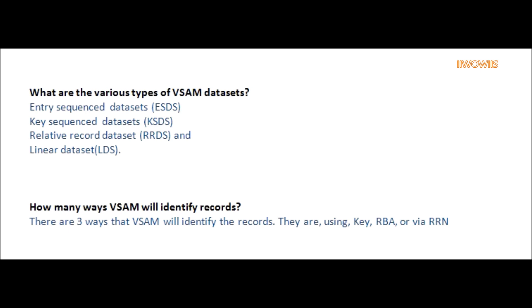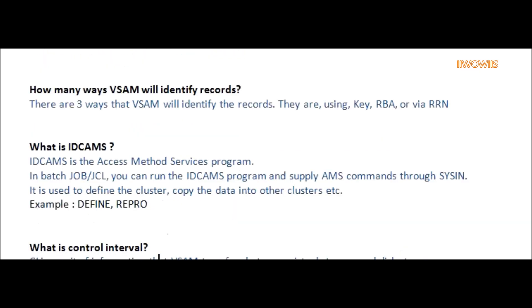Question: How many ways will VSAM identify records? Answer: There are three ways that VSAM will identify the records. They are using Key, RBA, or VRRN.